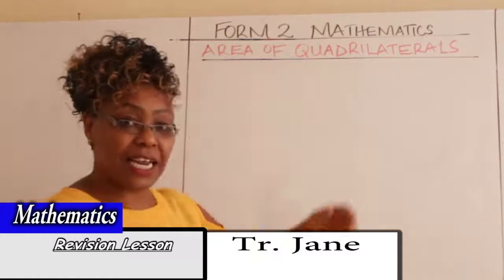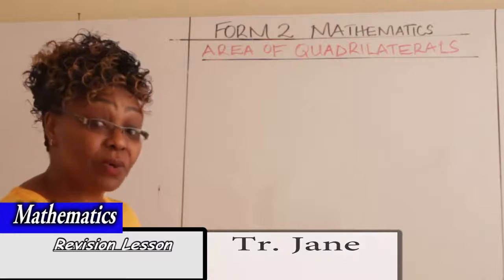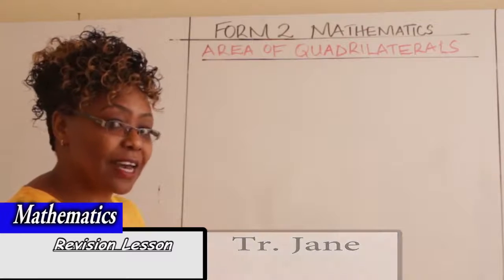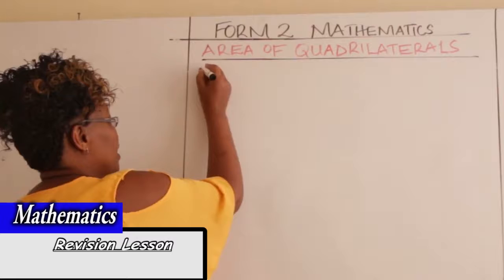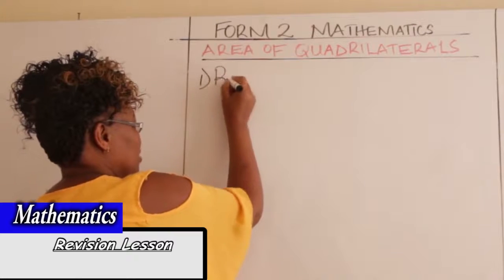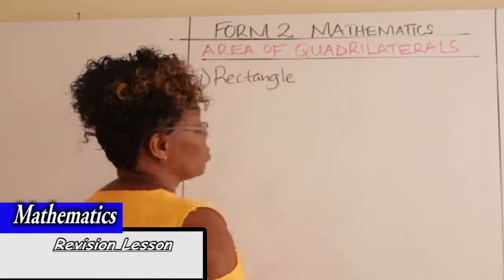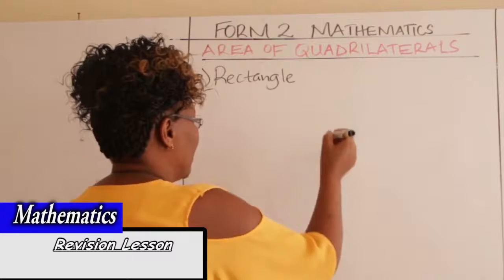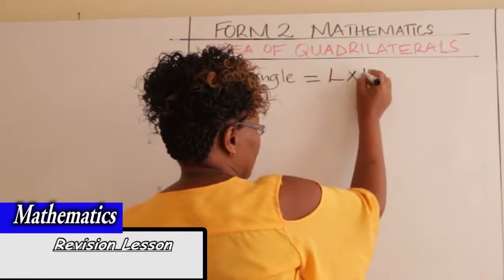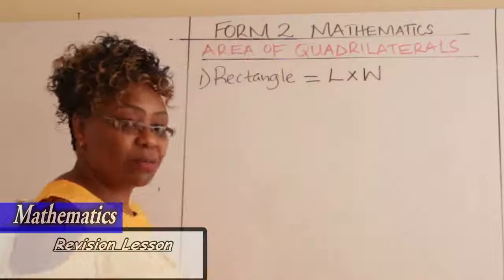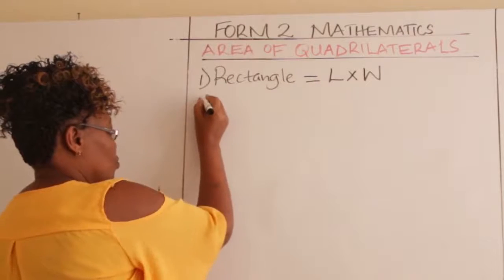What are quadrilaterals? They are those plain figures with four sides. We go straight away to a rectangle — that one we know, so we take it as a recap. We know that area of a rectangle is given by length times width. So that is straightforward. We go to number two.